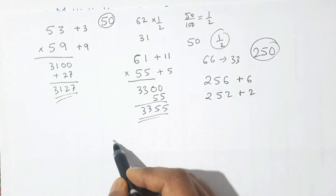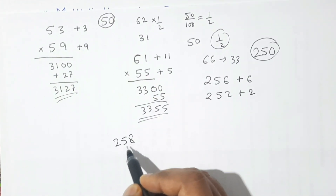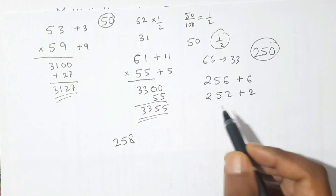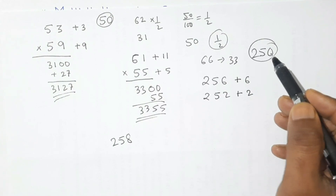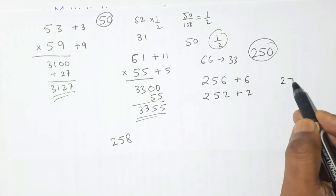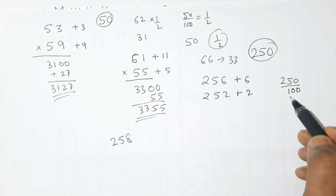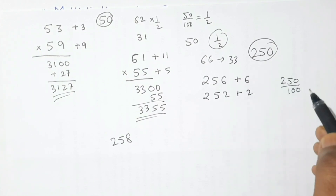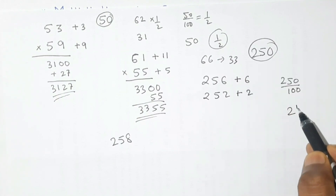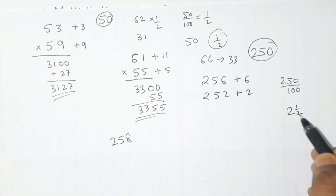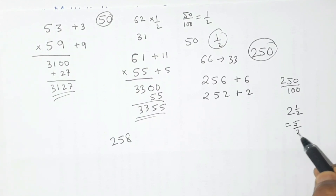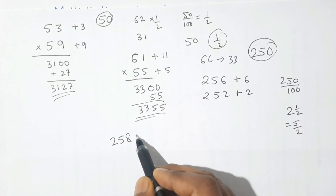Now we find what part of 250 is 100, that is the ratio of 250 to 100. 250 divided by 100: 200 is double 100 and 50 is half of 100, so 250 is 2 and a half times 100. Converting to an improper fraction gives 5/2. So we are going to multiply 258 by 5/2.